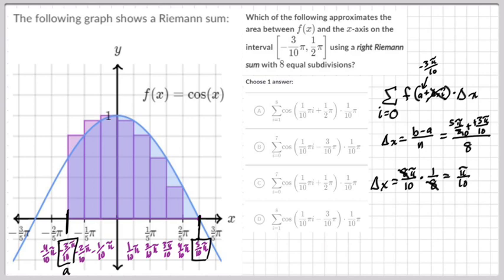If we started with zero, that would eliminate the Δx because Δx times zero would be zero. We don't want to start with zero, we want to start with one. So that means our sigma notation is going to go i equals one.